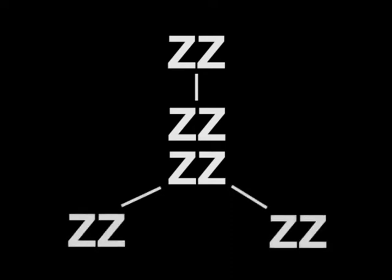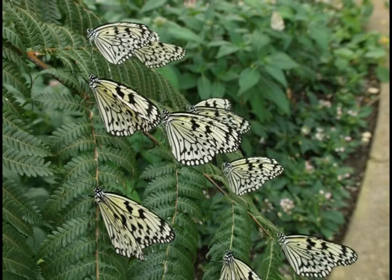For a gynandromorph to form, a cell such as a male cell which would be ZZ has to replicate, creating a cell with four Z's, and then divide. But instead of creating a normal male cell with two Z's each, it creates one cell with three Z's and another with one.